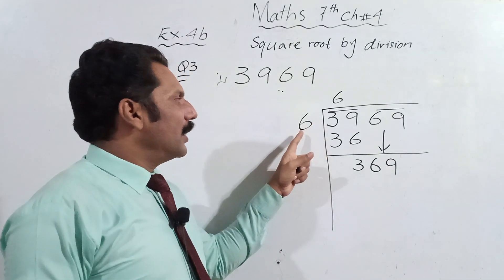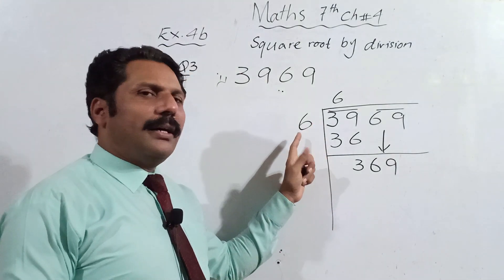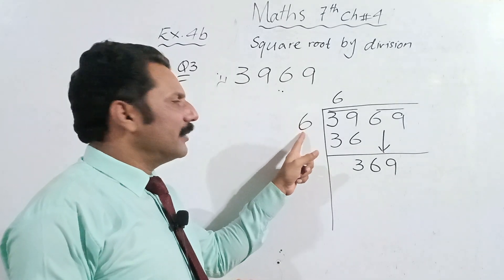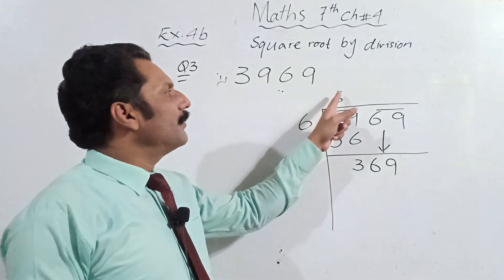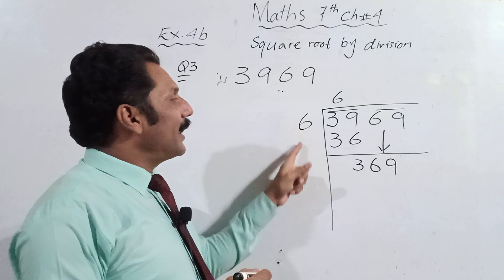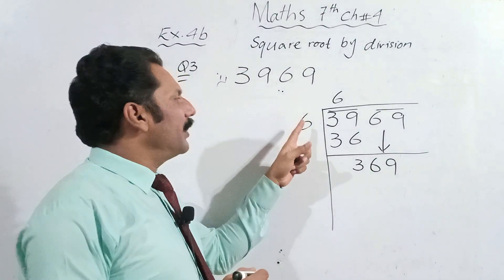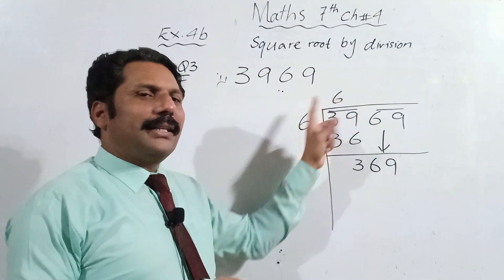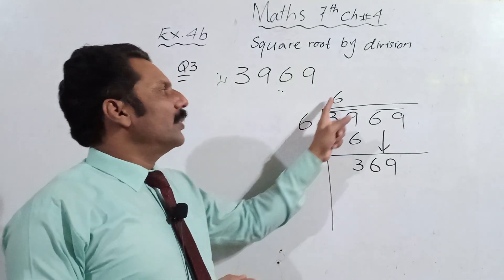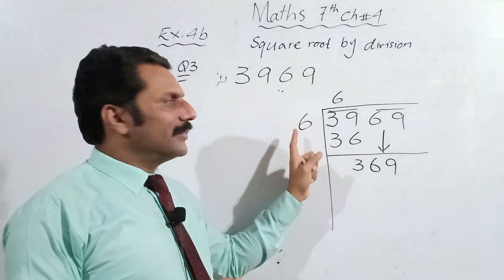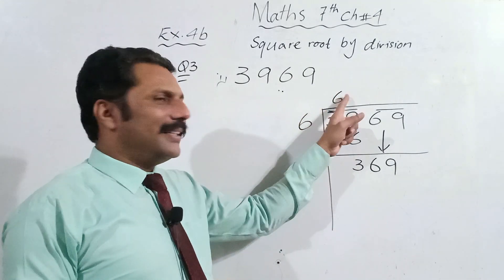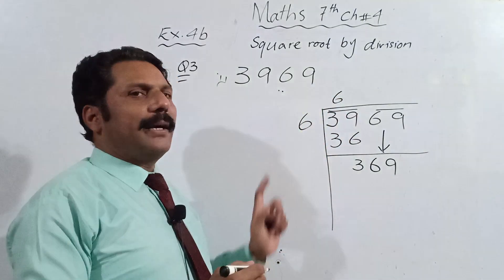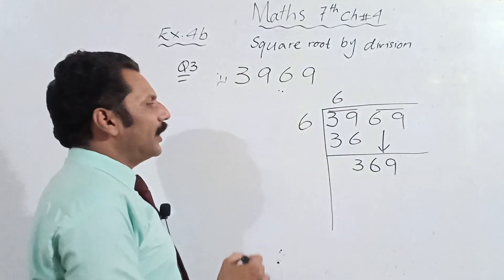In regular division we can write different things in different places, but while finding the square root by division method we write the same number in both places — in the divisor and in the quotient. For example: 4 and 4 gives 16; 5 and 5 gives 25; 6 and 6 gives 36. We always write the same number at both places.